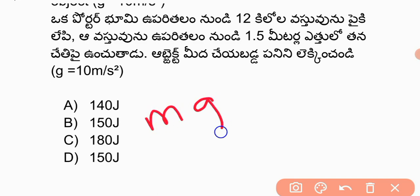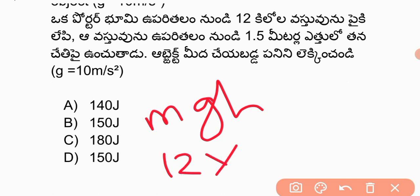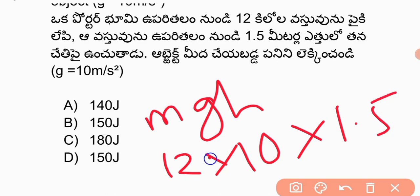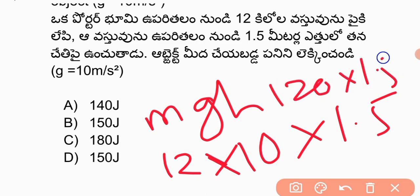Work done equals mgh. Here mass is 12, gravity is 10, and height is 1.5. So work done equals 12 into 10 into 1.5, which equals 180 joules. In the next topic we have potential energy and kinetic energy, which are important topics. Work done here is 180 joules.